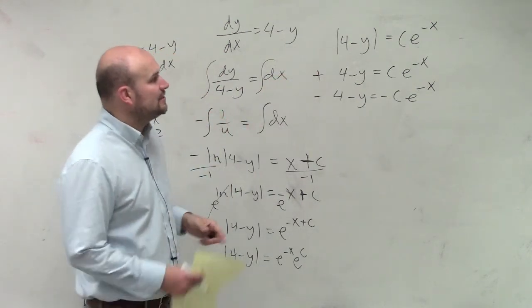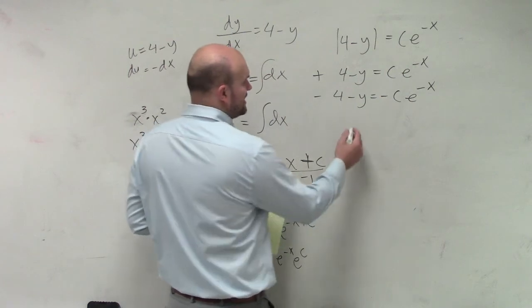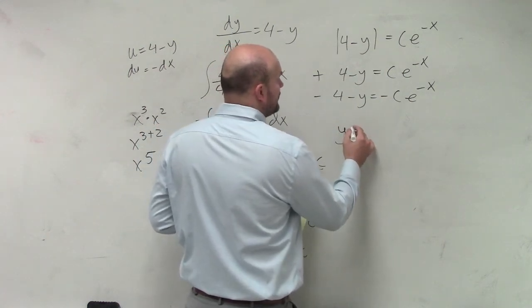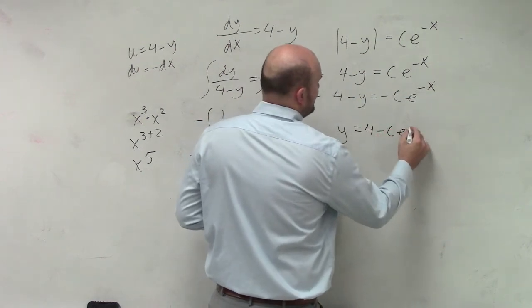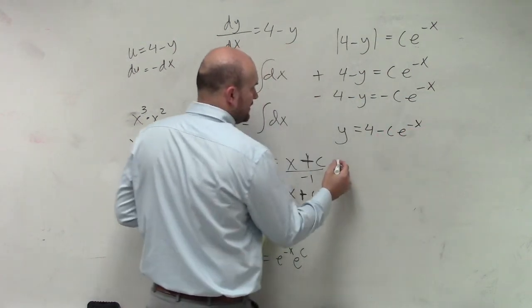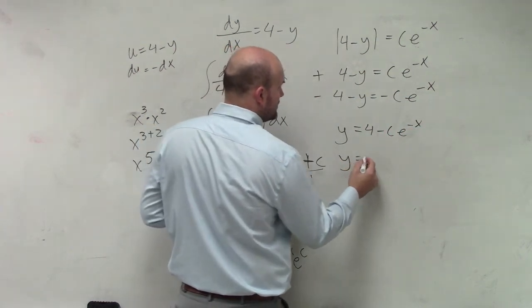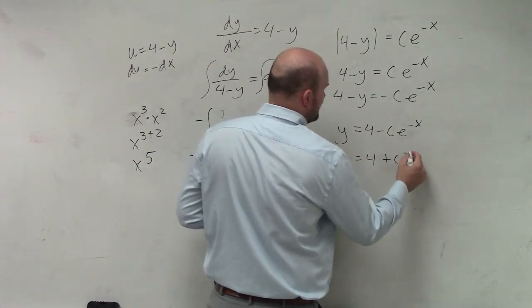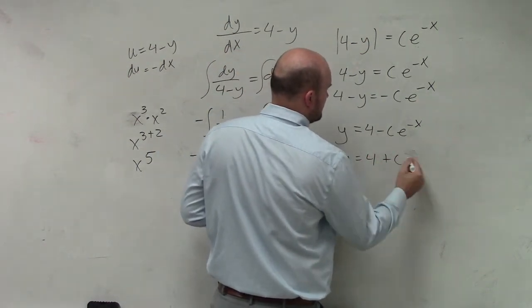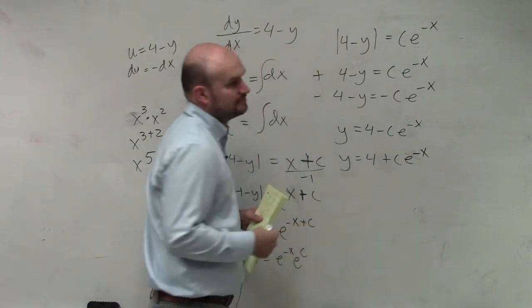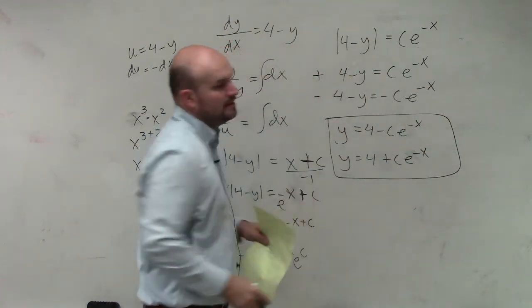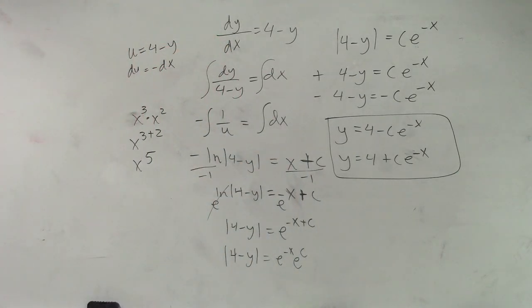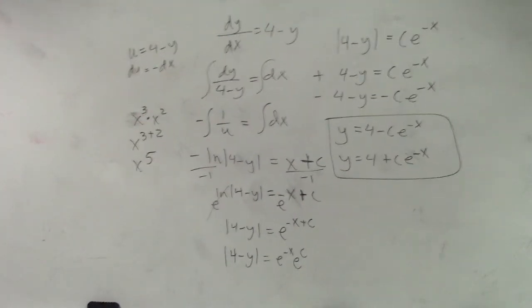So, now we can just go ahead and solve for this. And what you guys have is we have two cases. We have y equals 4 minus c e to the negative x, and we have y equals 4 plus c e to the negative x. Again, this is a general solution, guys, so we're going to have c in our answer.